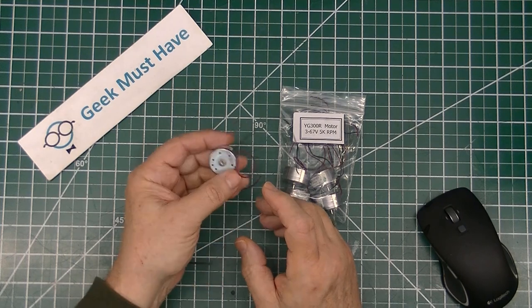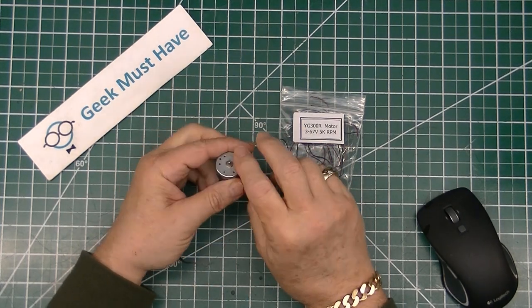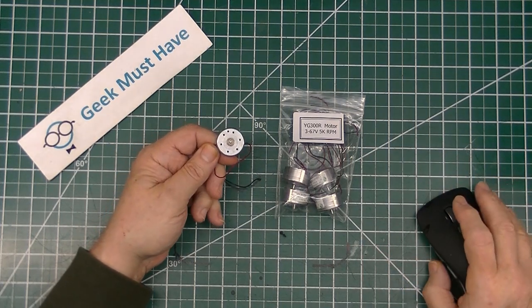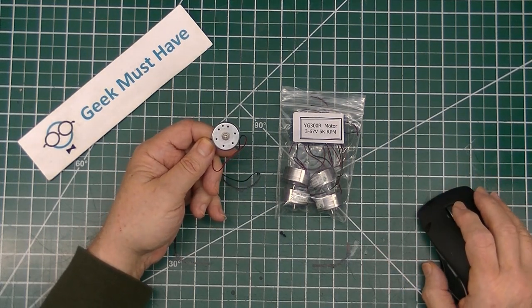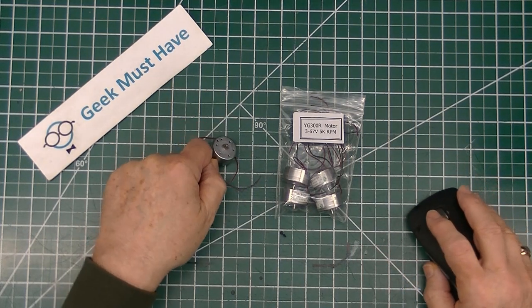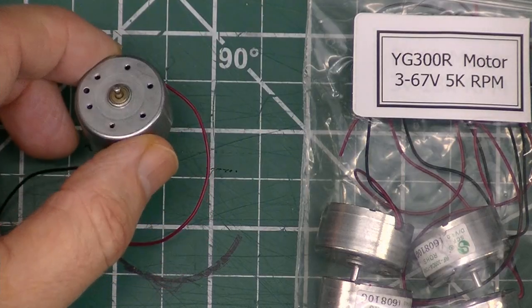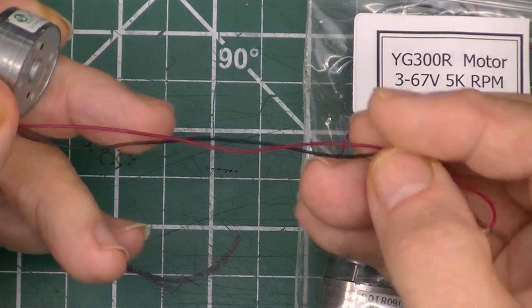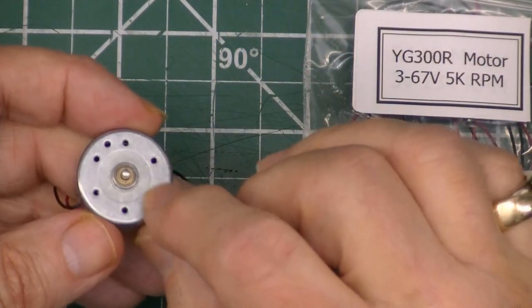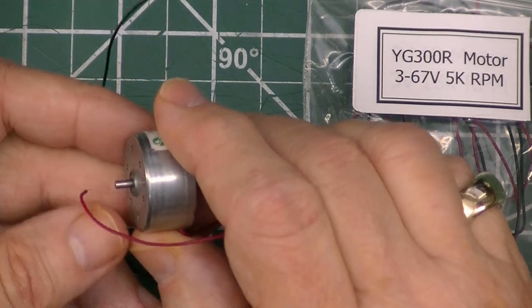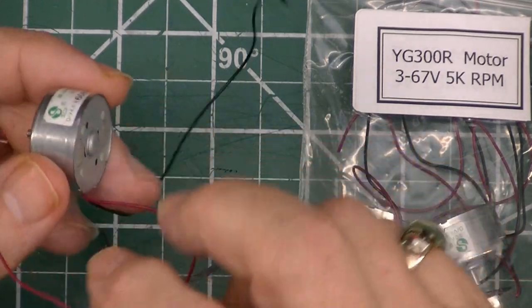The next item is this YG300R, it's called a solar motor. I don't know why solar, but it runs anywhere from 1.5 to 6 volts. It has the wires attached to it and it has a whole bunch of mounting holes on the top of this thing. The speed on this is up to 5,500 RPM.